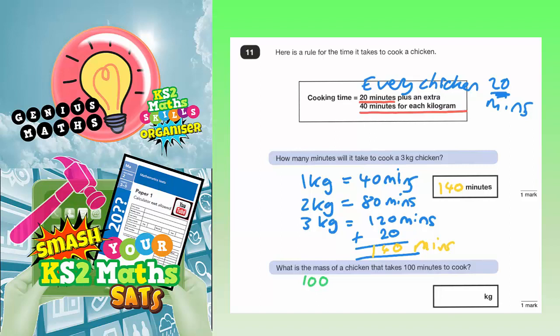Because whatever is left will be to do with how much weight the chicken has, how many kilograms. So if you take off the extra 20 minutes that every chicken has, 100 take away 20 is 80 minutes.